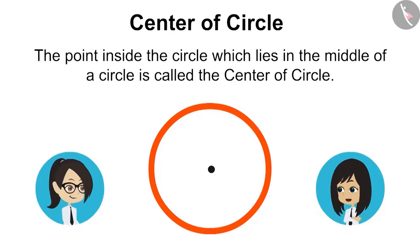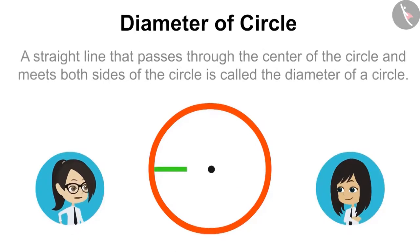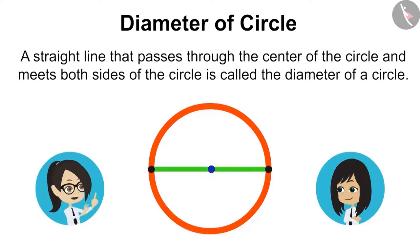Now can you talk about diameter? A straight line that passes through the center of the circle and meets both sides of the circle is called the diameter of circle.